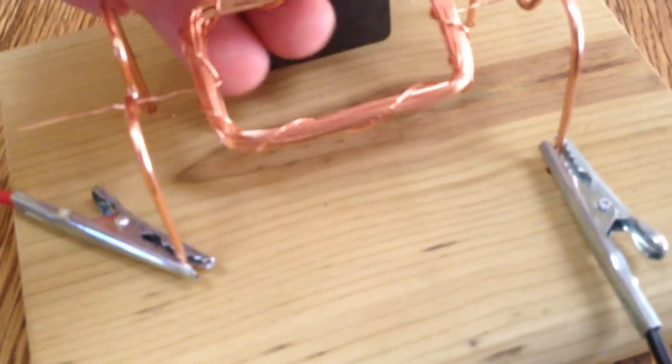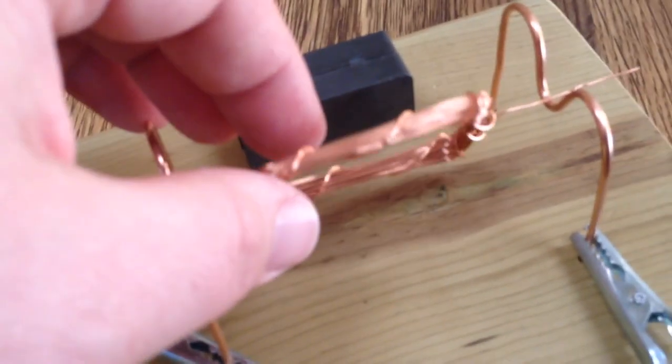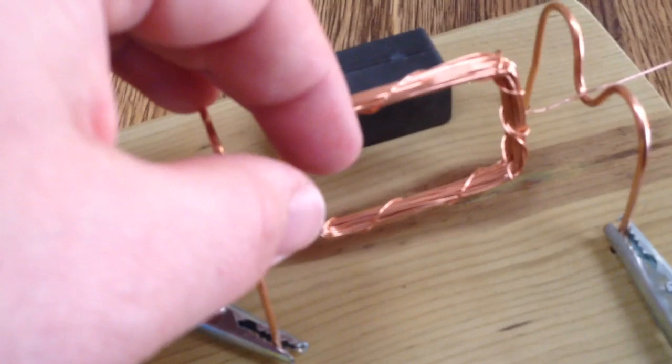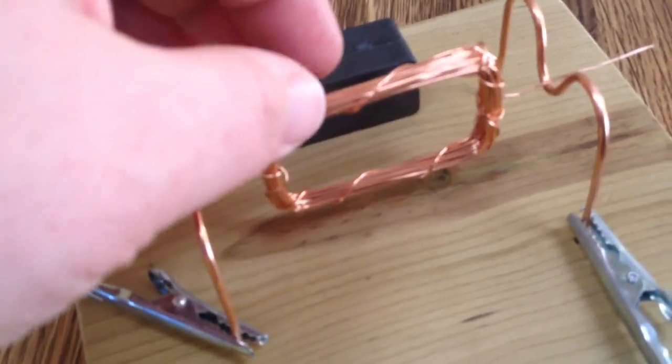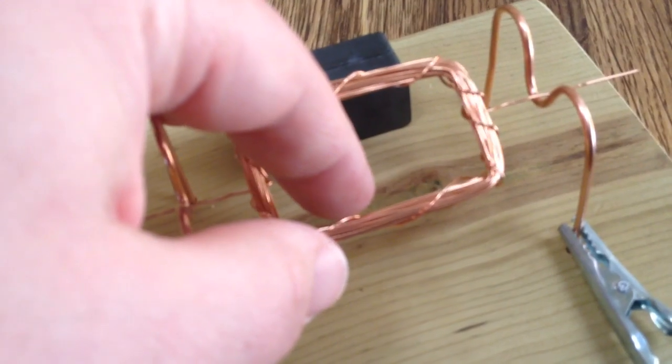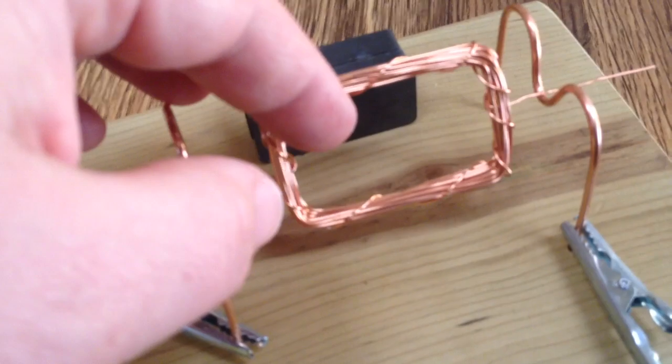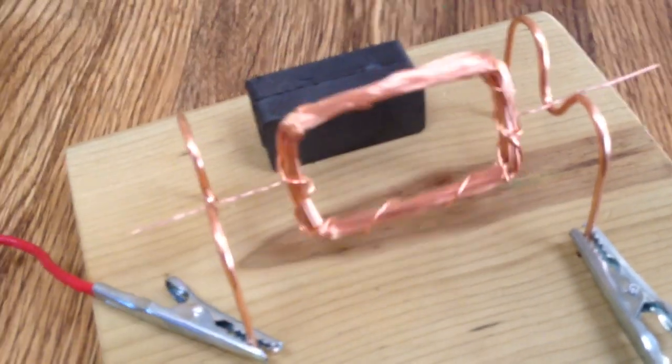The reason for that is so that it has a commutating effect, so that on one half of the turn electrical current will flow through the coil. On the other half of the turn there is no electrical current in the coil and it's just free running. In other words, momentum carries it over for half a turn.